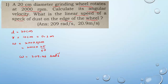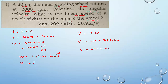Then we find linear speed V. The relation between linear and angular velocity is V = Rω. Substituting: V = 0.1 × 209.46 = 20.94 meter per second. This is the linear velocity at the edge of the grinding wheel.